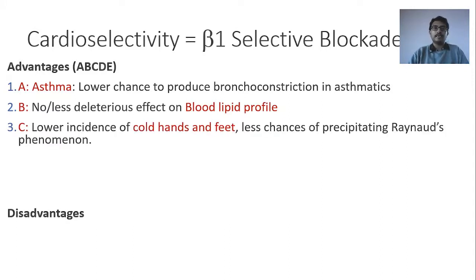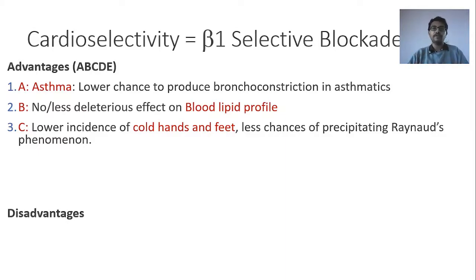C is for cold hands and feet. Cold hands and feet occur when peripheral blood vessels undergo vasoconstriction. Non-selective beta-blockers block beta-2 receptors on vascular smooth muscle, leading to vasoconstriction because of the unopposed action of adrenaline on alpha-1 receptors — resulting in cold hands and cold feet. This is especially dangerous in patients who already have Raynaud's syndrome. This is not seen with cardioselective beta-blockers because they do not block beta-2 receptors on the vascular smooth muscle.